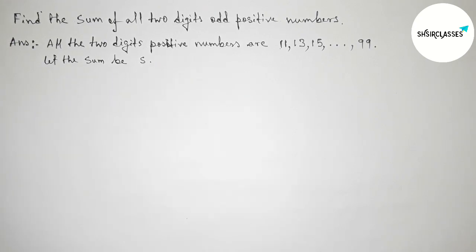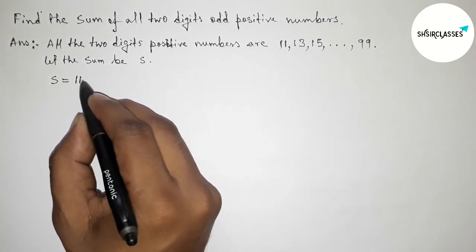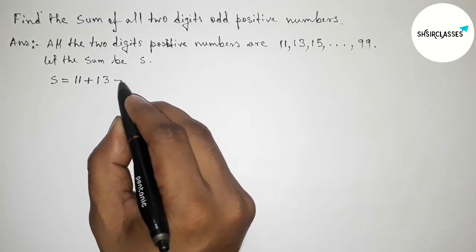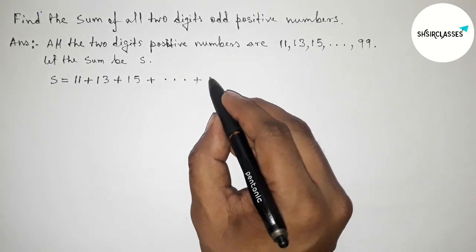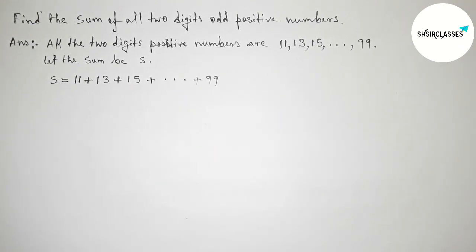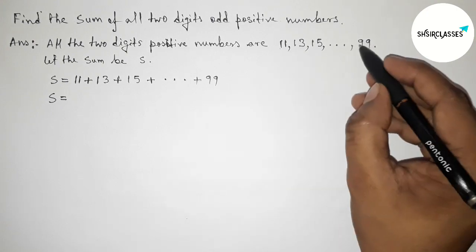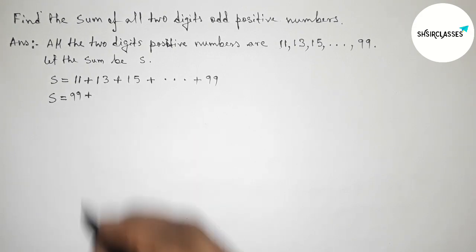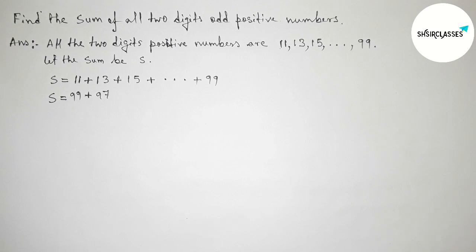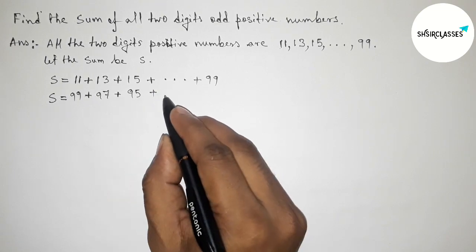Now let the sum of all two-digit odd positive numbers be S. So S equals 11 plus 13 plus 15 plus dot dot dot plus 99. We can also write S in reverse: starting from 99, then 97, then 95, and so on.